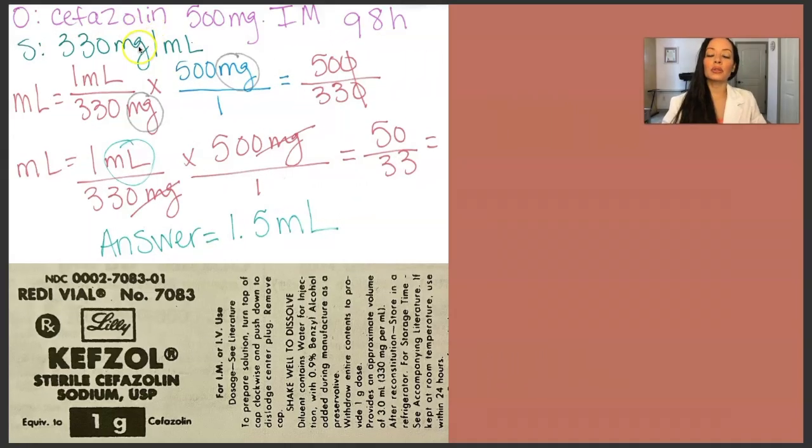Then we have cefazolin, which is an antibiotic. And the order is 500 milligrams IM every eight hours. Okay. So how many are we giving per dose? How much are we giving per dose? Again, always start with what's the order? What's the supply? And for this one, you actually had to read. If you go down here, it says that you read through all of this, and then it's 330 milligrams per milliliter.